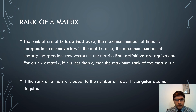Now we move on to the concept of rank of a matrix. The rank of a matrix is defined as either the maximum number of linearly independent column vectors or the maximum number of linearly independent row vectors in the matrix. For an R by C matrix, if R is less than C, the maximum rank is R. If the rank equals the number of rows, the matrix is termed singular; otherwise it is non-singular.